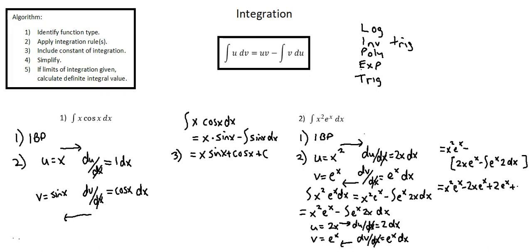Here we'll add our constant of integration, plus C. And we've completed our integration. The integral of x squared times e to the power of x with respect to x is x squared e to the power of x, minus 2x e to the power of x, plus 2 e to the power of x, plus C. We've completed all requirements. This concludes the lesson on integration by parts — we've completed the essential section. Thanks so much.